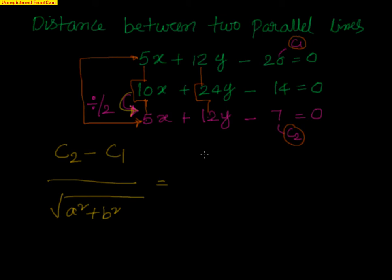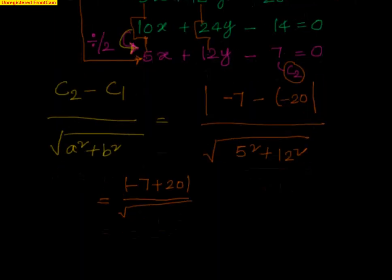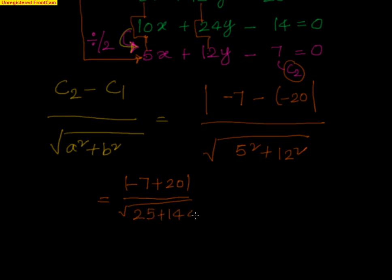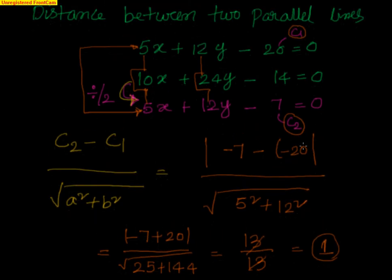Now we apply the formula: |C2 − C1| / √(A² + B²) = |(−7) − (−20)| / √(5² + 12²) = |13| / √(25 + 144) = 13 / √169 = 13 / 13 = 1. So the distance between the two parallel lines is 1. Hope that's clear — it's quite straightforward. See you in the next video where we'll do some more problems. Thank you, bye!